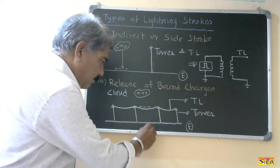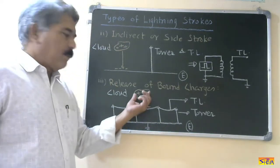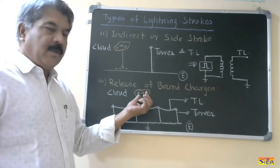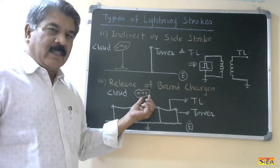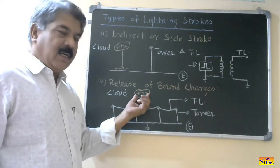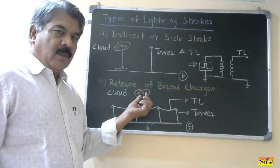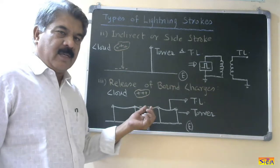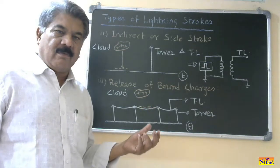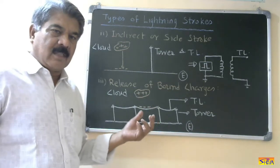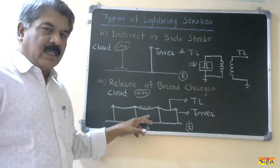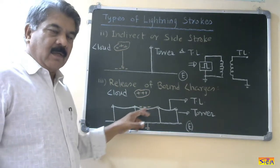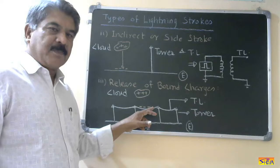The cloud has a positive charge. As per the theory, when positive charges accumulate in the cloud, negative charges are established on the topmost object on the earth below the cloud. Below this cloud there is a transmission line, so negative charges will be established on the transmission line conductor.